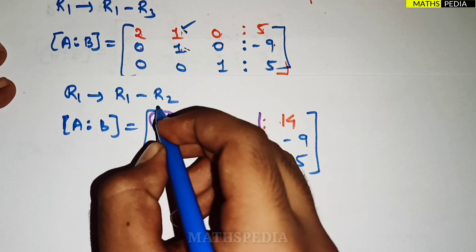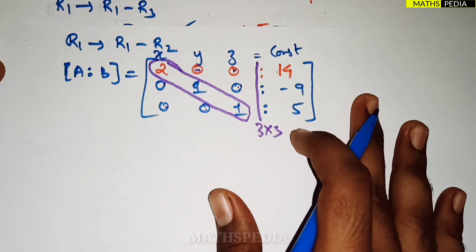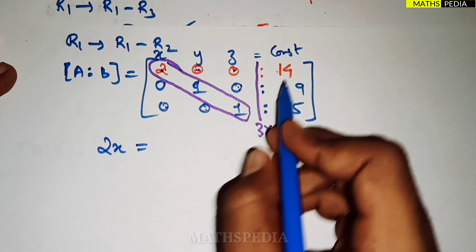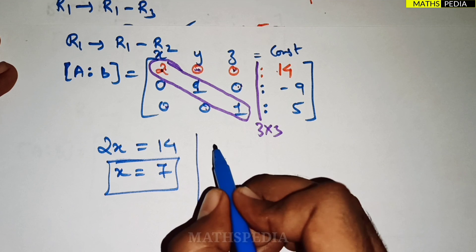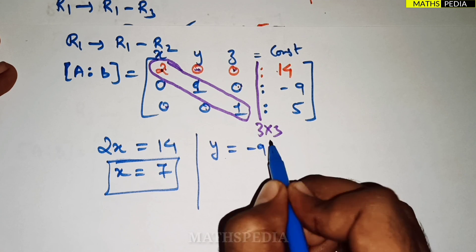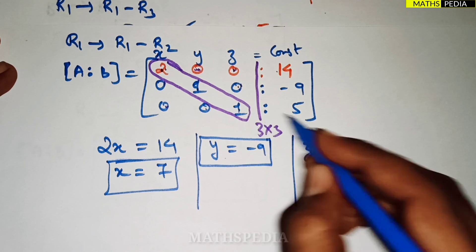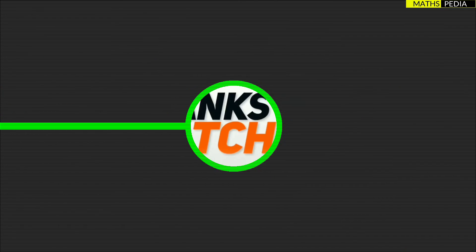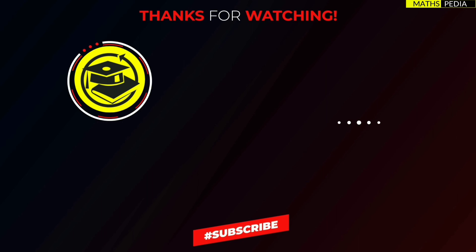We can now read off the solution directly. The columns represent x, y, z and the last column is the constant. From row 1: 2x = 14, so x = 7. From row 2: y = −9. From row 3: z = 5. We have obtained all three values directly without back substitution, which is the advantage of the Gauss-Jordan method.